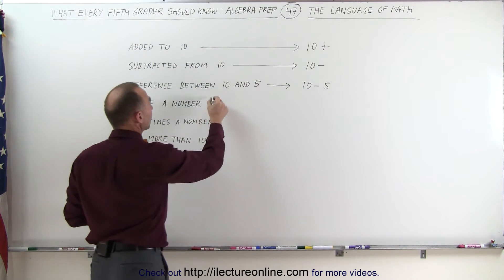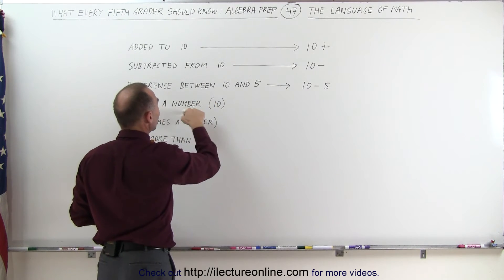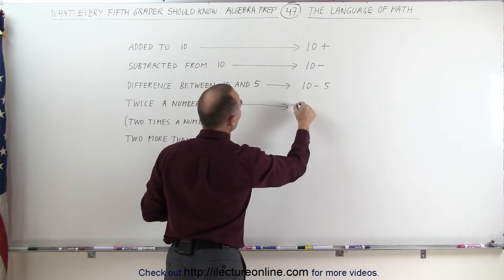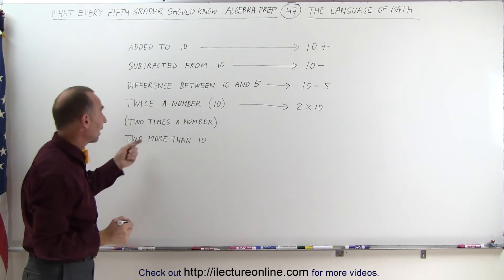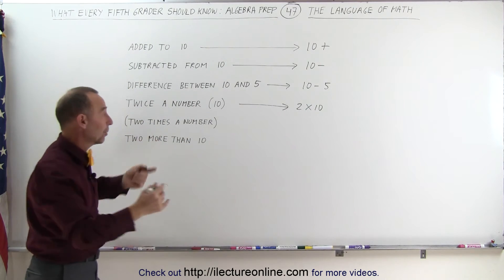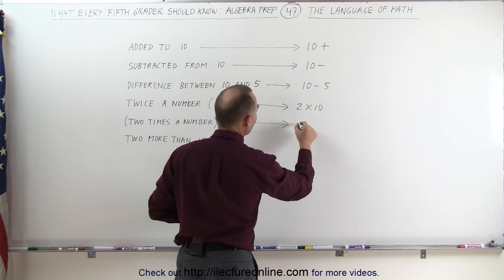Twice the number, let's say we have the number 10. Twice the number means two times that number. Or sometimes we write out two times the number, and then you write exactly the same thing, two times that number.